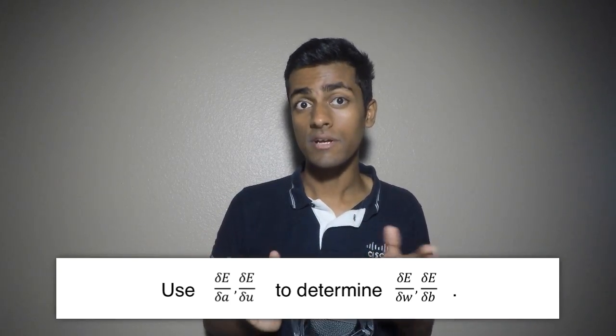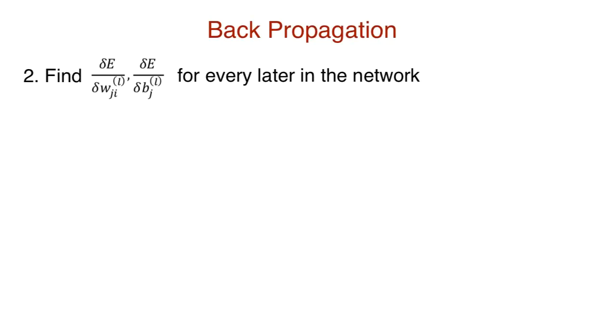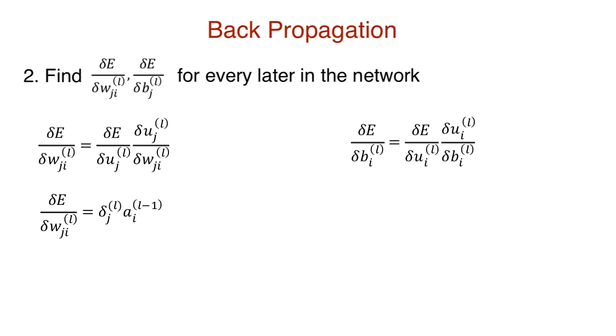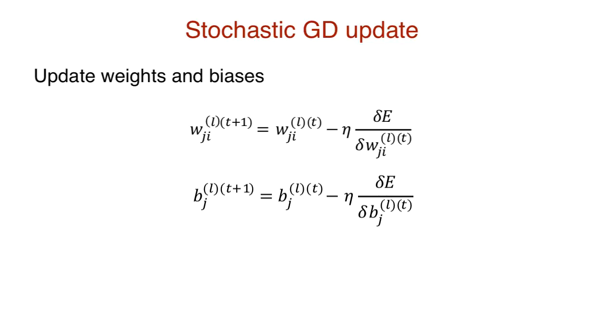Once we compute all the cost gradients with respect to U and A for every single neuron in the network, the next step is to compute the cost gradients with respect to the weights and biases. The derivative of the cost E_n with respect to W_ji represents how much this edge affects the cost. We can apply good old chain rule through U_j. And we simplify. Substitute the first term with delta, and the second term can easily be computed with differentiation. And what about the bias? We do the same thing. Apply chain rule with U to get the delta form and substitute the values. Once you determine all the weights and biases in the network, perform the stochastic gradient update and get the new weights for the network. This is repeated for every sample in our training set.